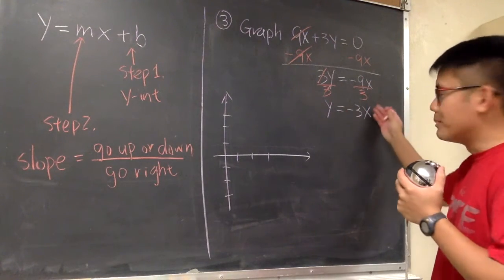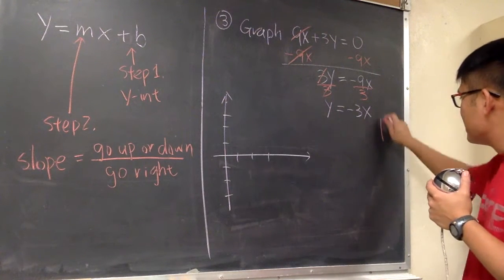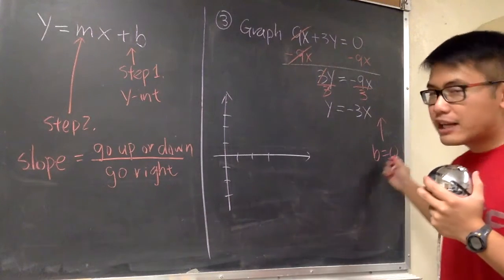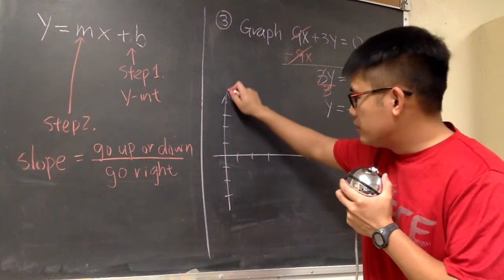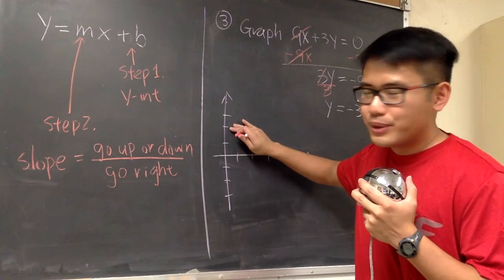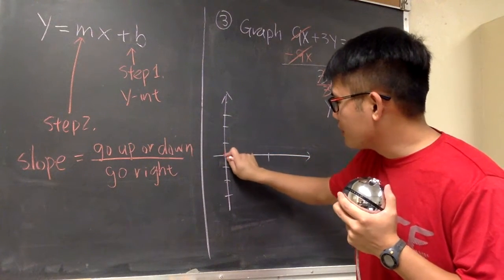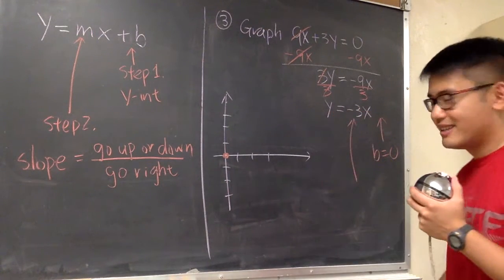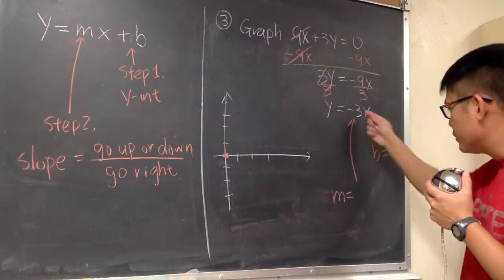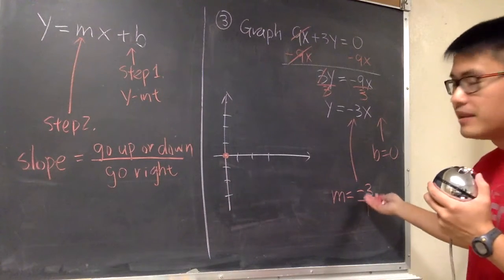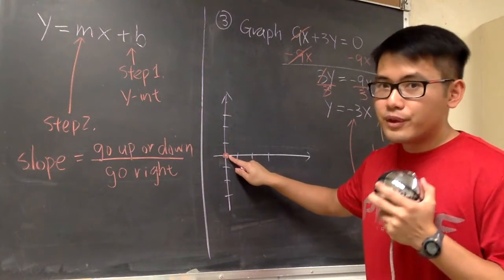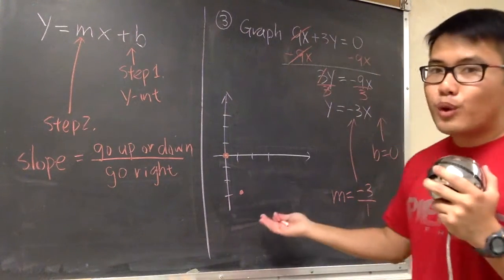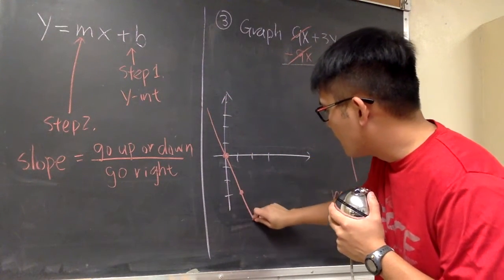Now that we have y equals negative 3x, what's the b value? It seems we don't have one, but b is equal to 0 — the y-intercept is 0. We still go to the y-axis; the point is where y equals 0, right at the origin. Next, the slope m is negative 3, written as negative 3 over 1. From the origin, go down 3 times — 1, 2, 3 — then move to the right one time. Two points is enough — connect the dots.